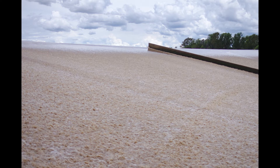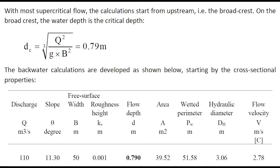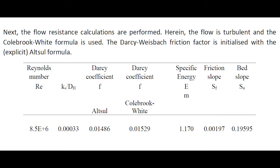The spillway chute flow is controlled by an upstream broad crest. With most supercritical flow, the calculations start from upstream — that is, at the broad crest, where the water depth is critical. The backwater calculations are developed, as shown below, starting with the cross-sectional flow properties at the location of known flow depth.